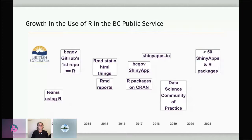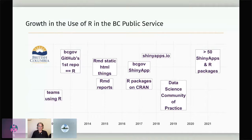Following that, the government started to leverage the shinyapps.io platform for publishing. In 2019 we launched an official data science community of practice, which I'll talk about a little bit later. And today we have over 50 Shiny apps and R packages in use in the BC public service.